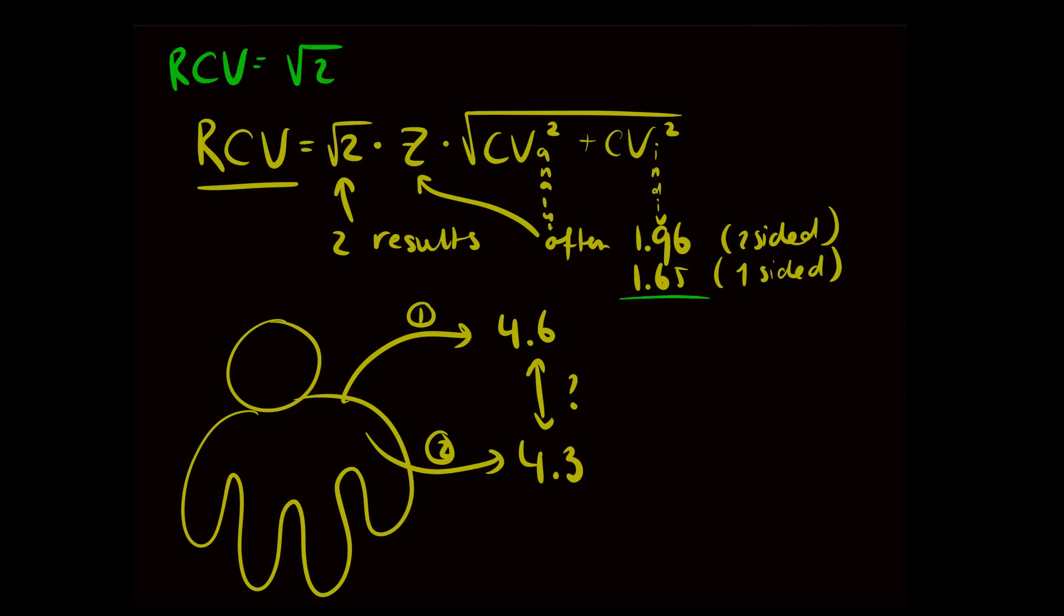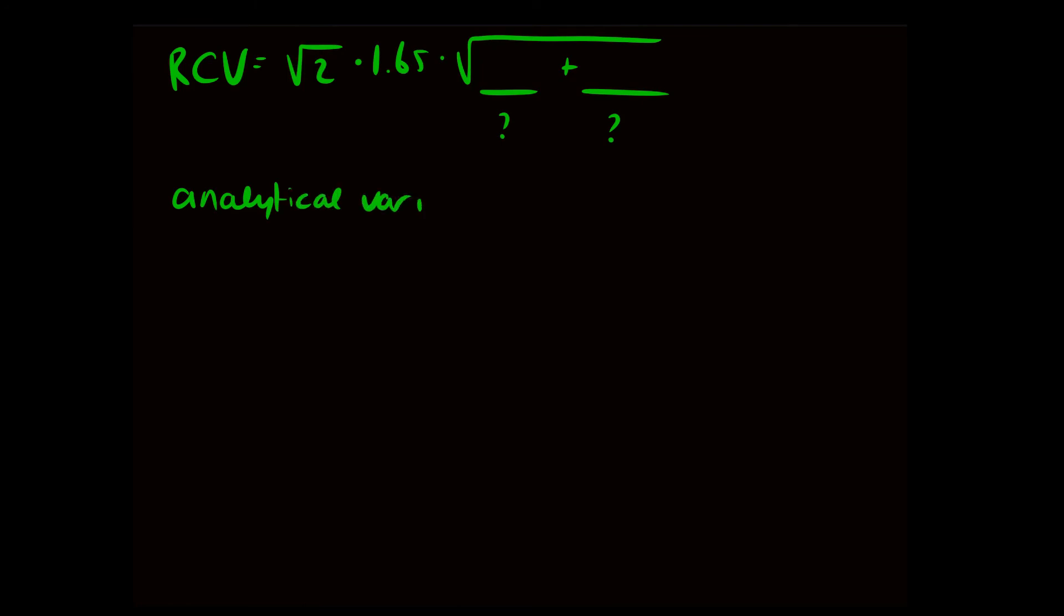Next, we need to know the variations. The analytical variation is derived from the lab, while the biological variation can be derived from biologicalvariation.eu. For this, we need a within-subject biological variation, as we want to indicate a difference within a person.